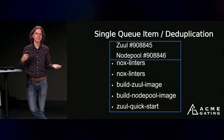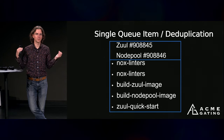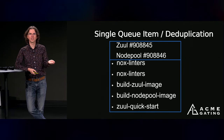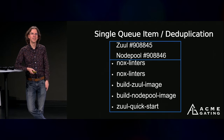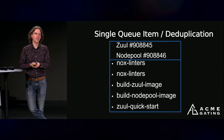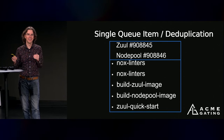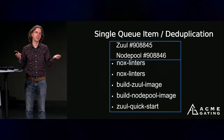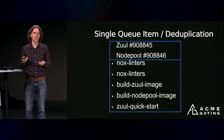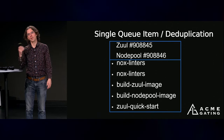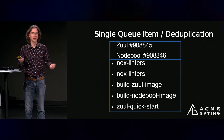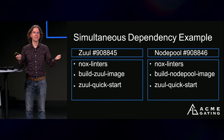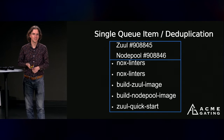This is what a circular dependency looks like today. Zuul enqueues both changes in one queue item, then runs jobs that may apply to one or both. The linter job runs twice because you still need to lint each change separately. One change builds a Zuul image, one builds a Nodepool image — those each run once. The quick start job, which was previously needlessly duplicated, now only runs once.